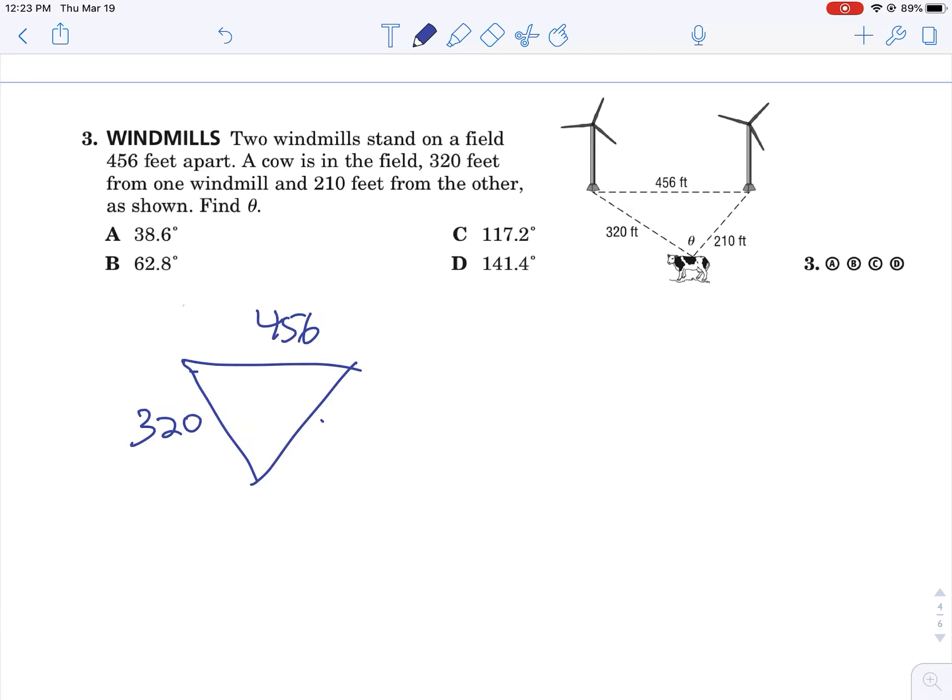Here's our theta. I'm going to call this triangle ABC just so I have some information. I'm going to use a little law of cosines, so C squared equals A squared plus B squared minus 2AB cosine of angle C.